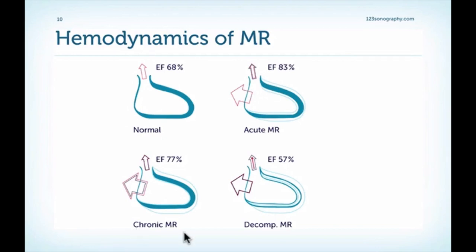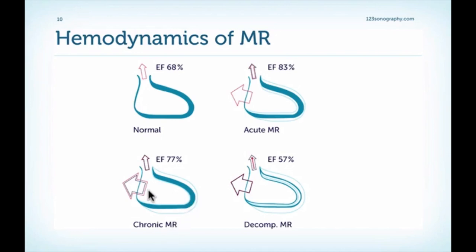In chronic MR, the left ventricle has had time to adapt. It adapts by increasing its size, and by increasing the size, it is able to eject more blood for each beat. In addition, we also have hypercontractility, but not as much as in the setting of acute MR. So in the chronic stages, we have the typical picture of volume overload in the setting of MR.